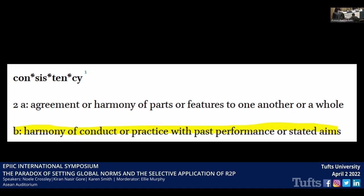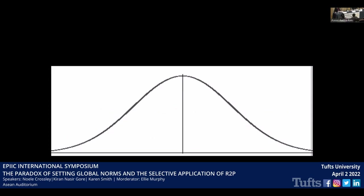Starting with harmony of conduct or practice with past performance or stated aims: that is a standard against which we can measure the responsibility to protect. Do states routinely respond to grave violations of human rights? And if so, how do they respond? Do we observe consistency of practice with regard to international responses? For those familiar with statistics, consider a normal distribution. From a sociological perspective, we would understand a norm to be a routine, regular, habitual type of behavior and social practice.